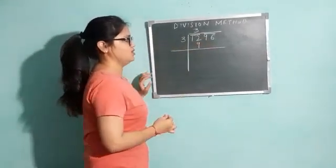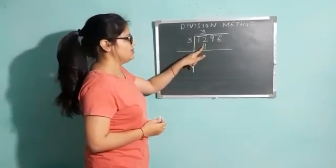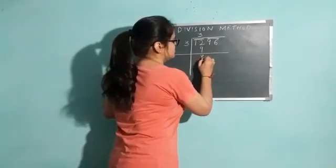Now, what is 12 minus 9? If you subtract 9 from 12, you get 3.